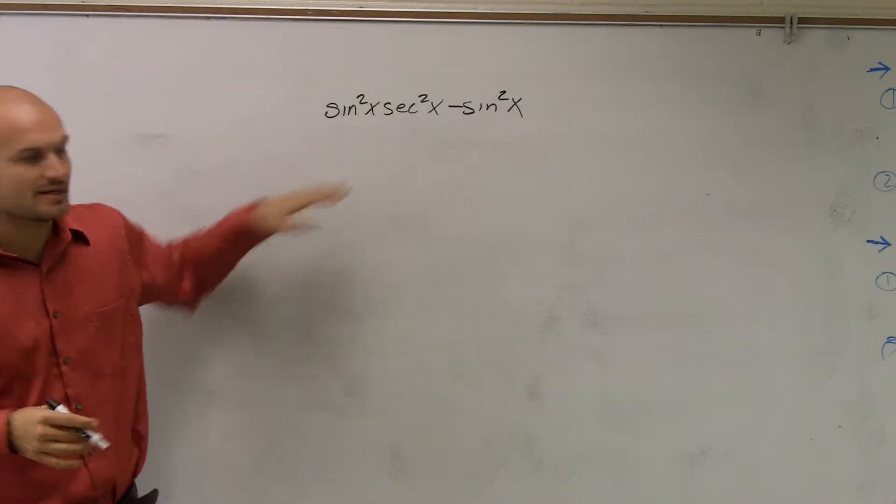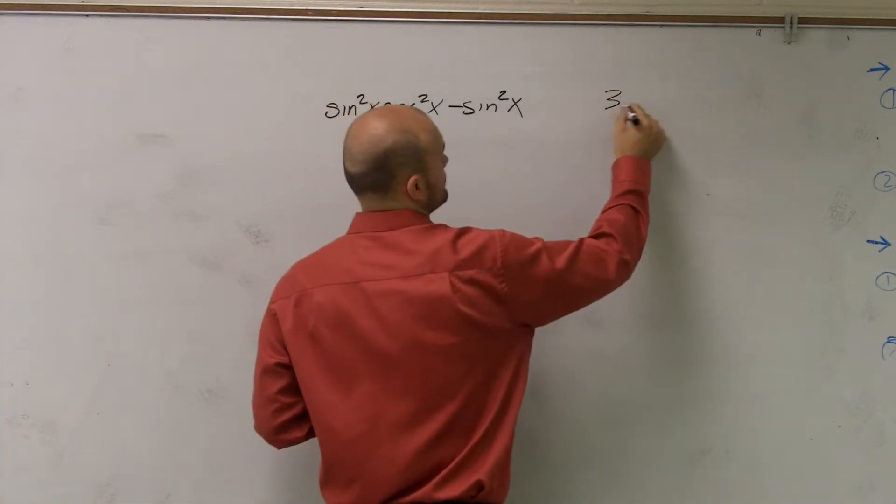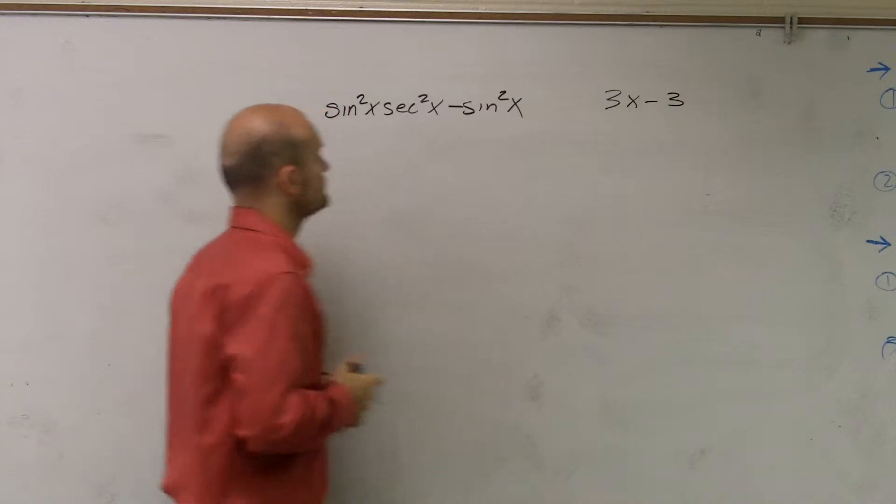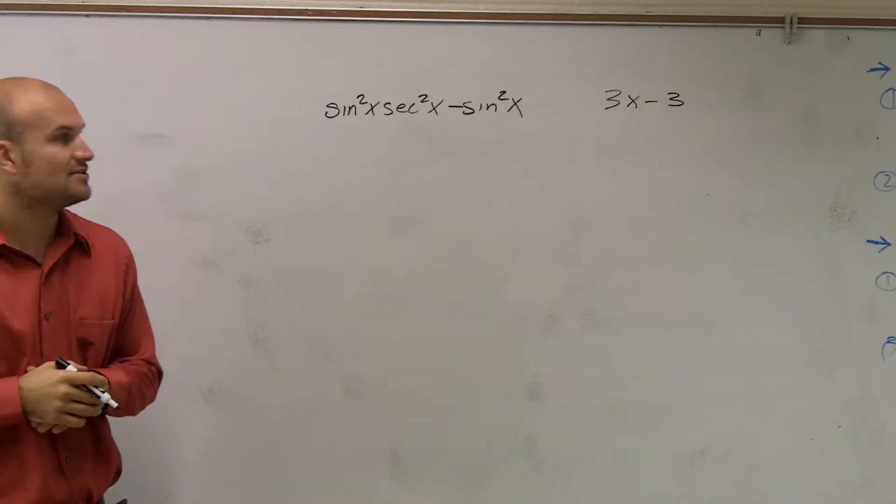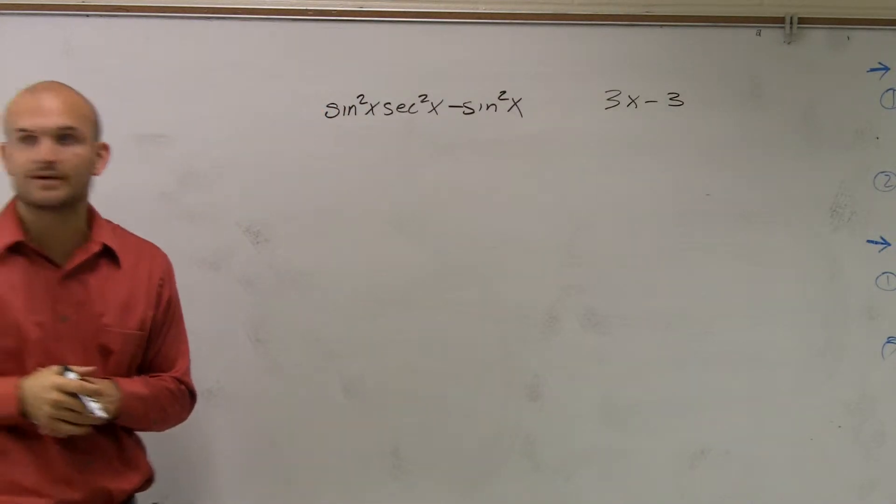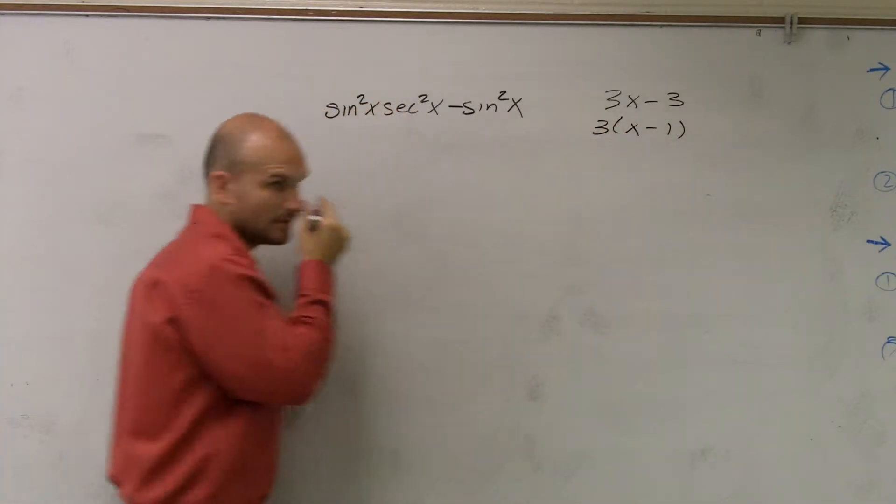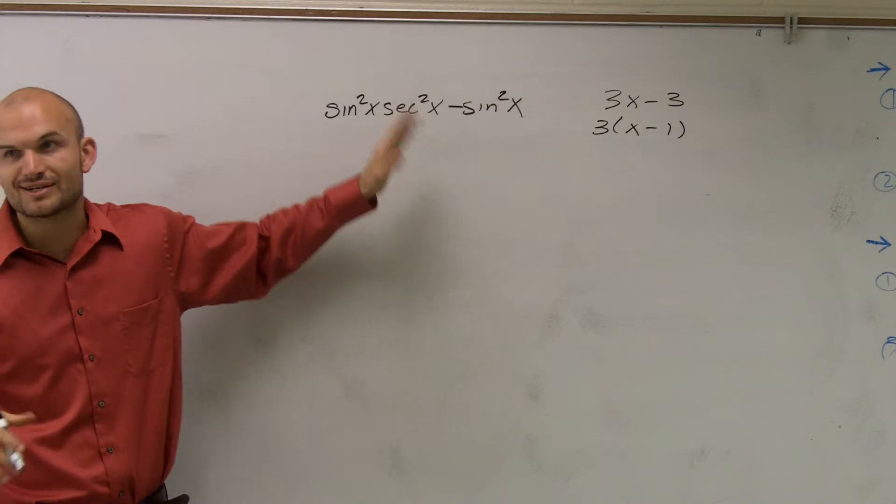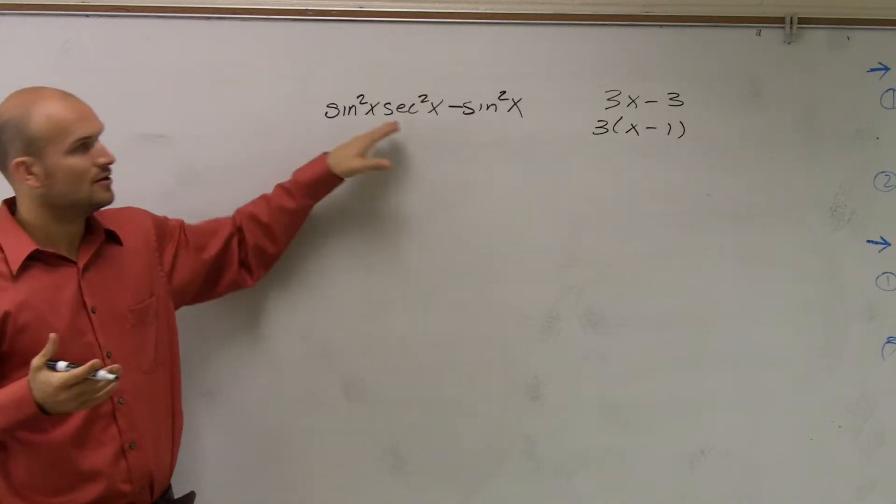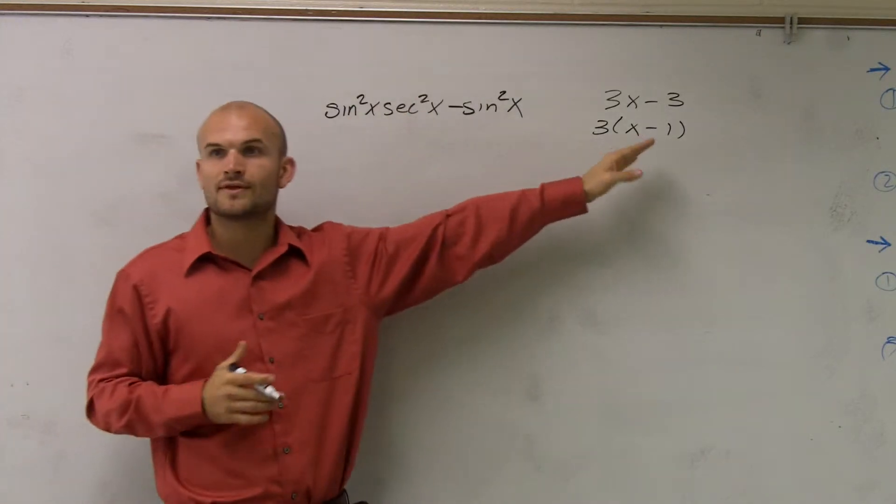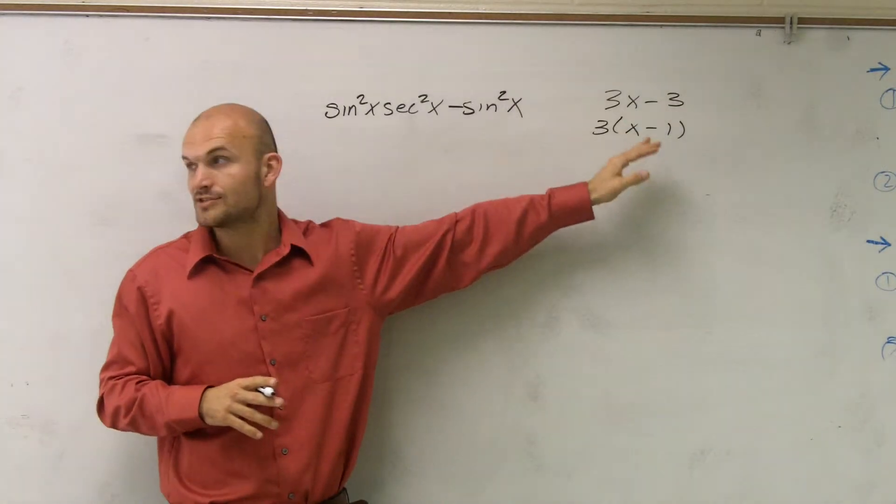So I'm going to kind of relate this to this problem, OK? If I was going to factor out 3x minus 3, I would factor out a 3, and I'd be left with x minus 1, all right? This problem is very similar. The only difference is we're using terms that are a lot more difficult than 3 and 3x minus 3. However, the math is going to be exactly the same.